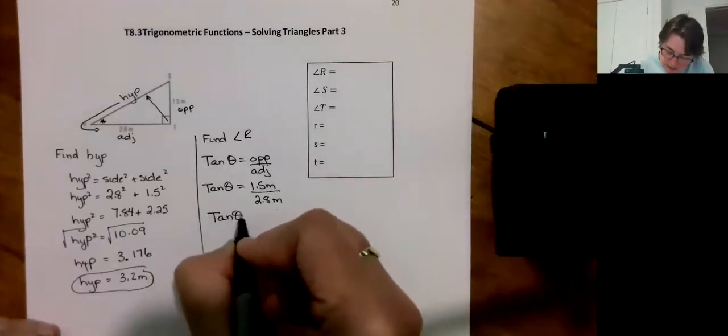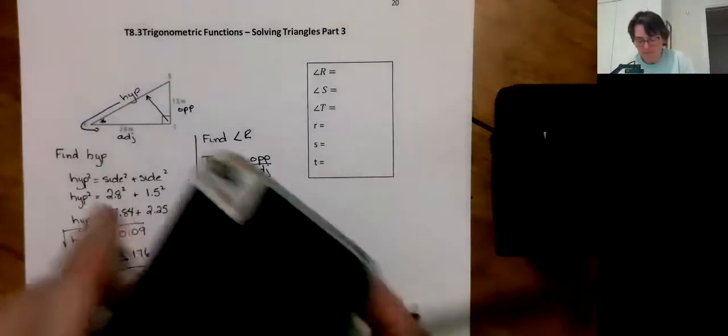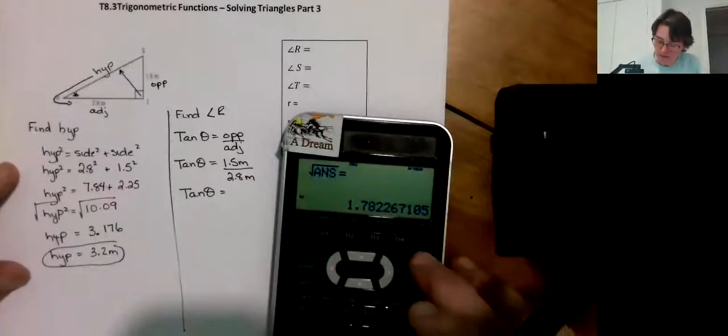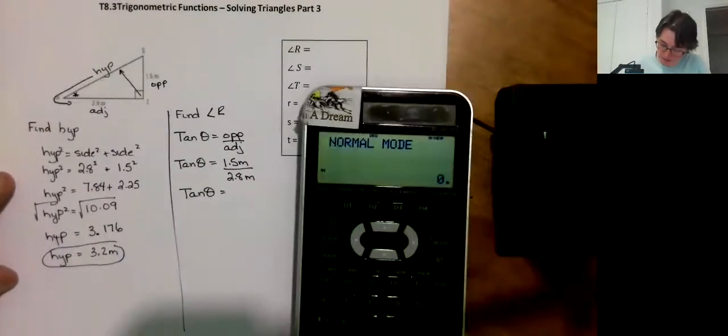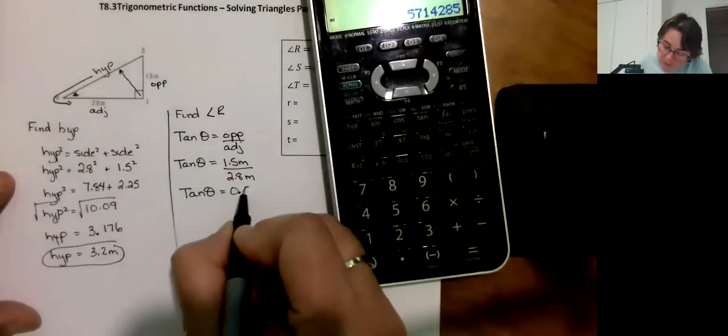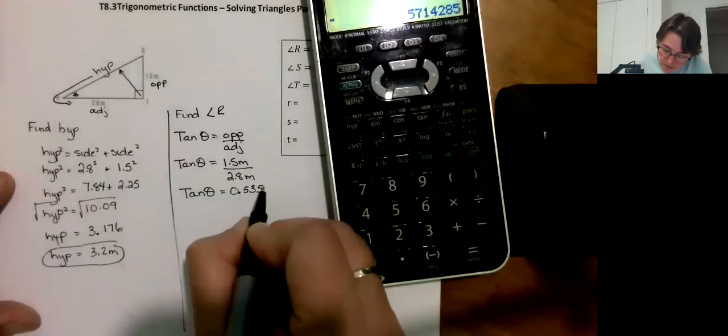So tan theta. You didn't necessarily need the meters in there. That was just helpful. Won't hurt you. 1.5, 2.8. Because you know what? They would just disappear. When you divide it out, they would cancel.